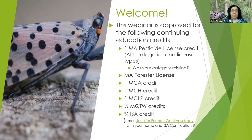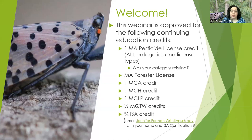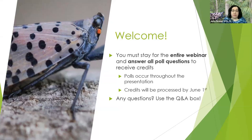All of those other credits except for the Mass Pesticide License credits are kind of self-serve — you don't need any information from us to get those credits, except for the ISA credits. If you registered for a three-quarters ISA credit, I need you to email me with your name and your ISA certification number because the ISA is requiring that information. Just a reminder: you need to stay for the entire body of the webinar, which runs until about 11 o'clock, then we'll have Q&A. You need to stay for the entire webinar and answer all of the poll questions to receive license credits.